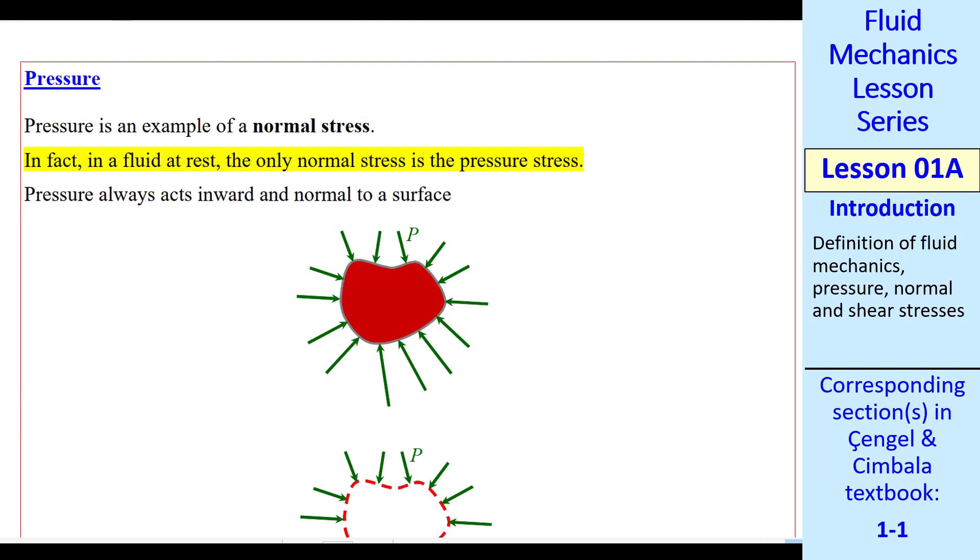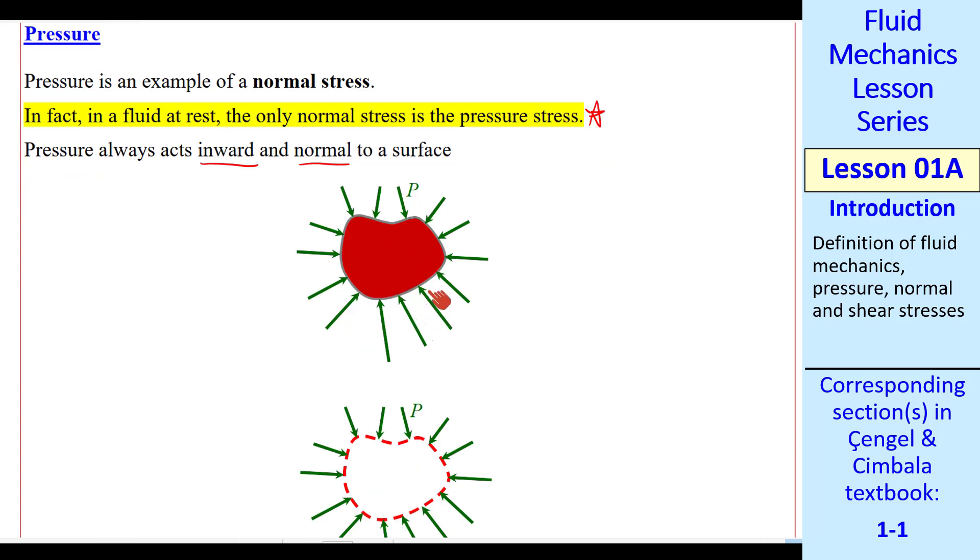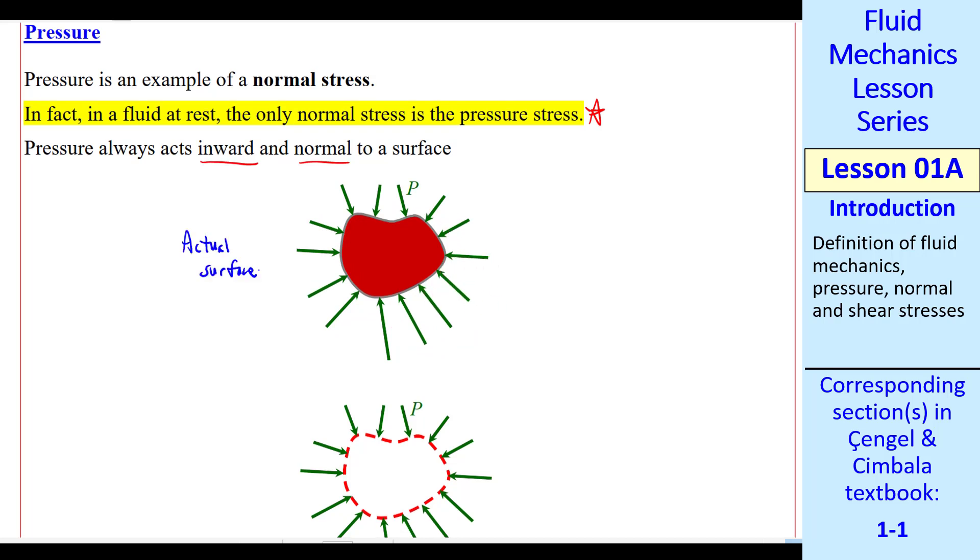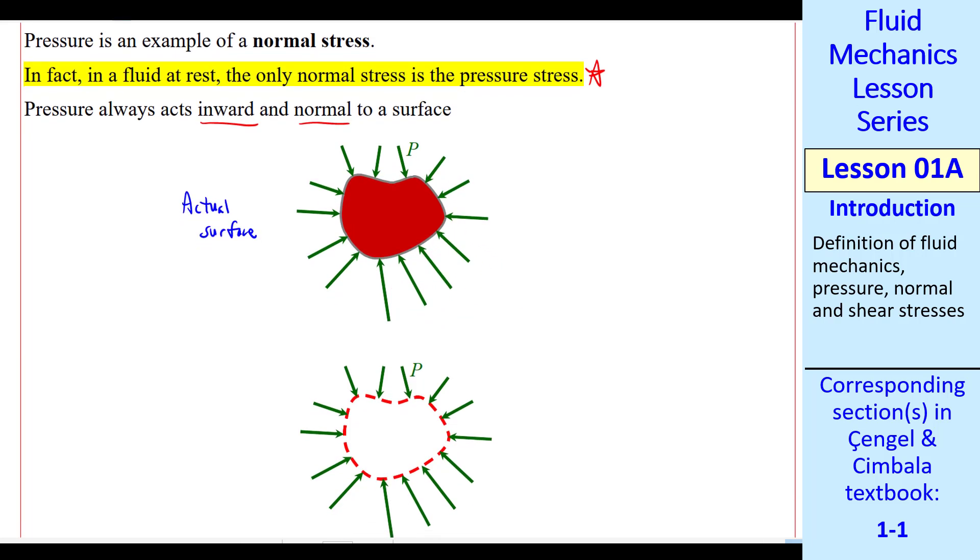Pressure is the most common example of a normal stress. In fact, in a fluid at rest, the only normal stress is the pressure stress. And pressure always acts inward and normal to a surface. For example, if you have a solid object like this, the pressure acts always inward and normal. Always acts towards the surface and normal to the surface. This is the case of an actual surface like a potato.